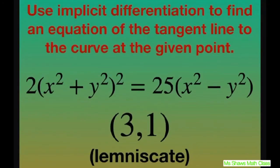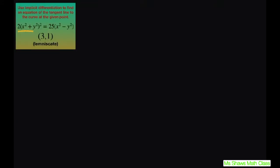Hi everyone. We're going to use implicit differentiation to find an equation of the tangent line to the curve at the point. So the first thing we're going to do is differentiate it implicitly.